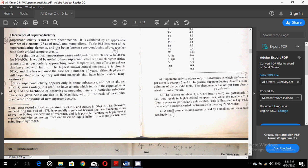It would be useful to have a superconductor with much higher critical temperatures, particularly approaching room temperature, but efforts to achieve this have met with failure. The highest known critical temperature is close to 20 degrees K and this has remained the case for a number of years, although physicists still hope that someday they will find materials that have high critical temperatures.